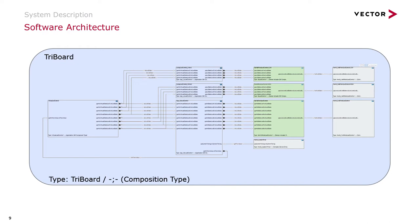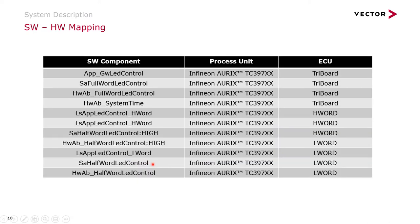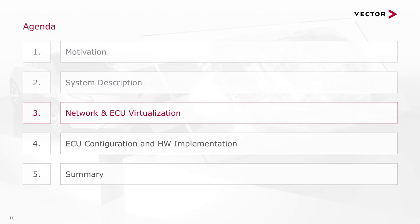The system description that contains all the network communications, ECU instances, and software component descriptions will be exported from PREEvision, which is the AUTOSAR system authoring tool. Additionally, an individual ECU extract can be exported and used for ECU configuration. Later in the presentation, the configuration and hardware deployment process will be described. This table shows the software and hardware mapping to indicate on which processing unit the software components will run — a mandatory concept in AUTOSAR.